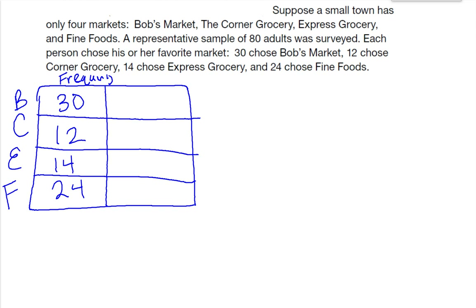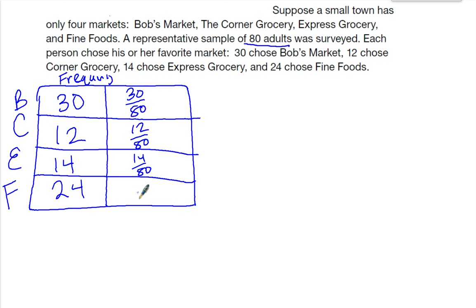On the right side, we're going to put the fraction of each of these amounts. I can change each of these into fractions. The total number of adults surveyed was 80, so Bob's is 30 over 80, and we have 12 over 80, 14 over 80, and 24 over 80.